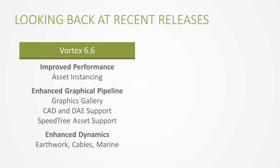Vortex 6.6 also added support for CAD files and more 3D models through DAE support. CAD file support was a major game changer for virtual prototyping, since engineering models are typically built in CAD. The CAD optimizer add-on provided tools to simplify and de-feature those models for performance. Vortex 6.6 also added support for SpeedTree assets — one of the leading vegetation solutions — and shipped with about 35 pre-optimized SpeedTree models, plus continued improvements to the dynamics engine including cables and marine systems.